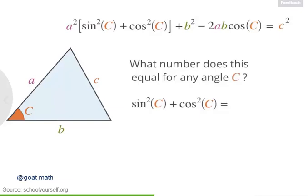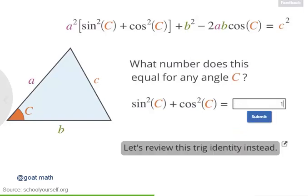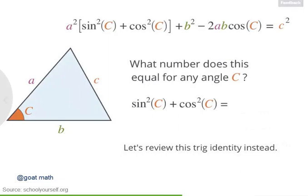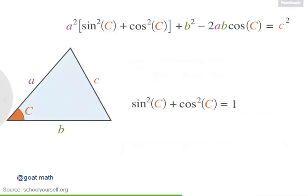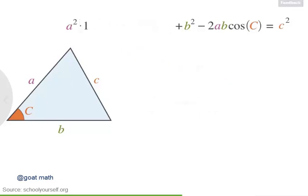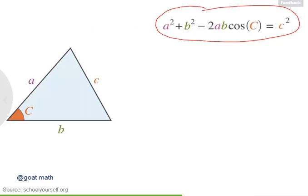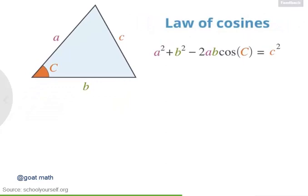What number does this expression equal for any angle c? It's a trig identity, and if you don't know it, you can review it by clicking here. Right, sine squared plus cosine squared equals 1 for any angle. So we can substitute 1 in for this expression, giving us a squared times 1, which is just a squared. And now we have an expression that looks a little less messy. And this is called the Law of Cosines. Notice it has a cosine over here. So the square of side c equals a squared plus b squared minus 2ab times the cosine of angle c.